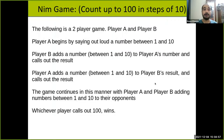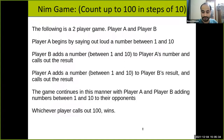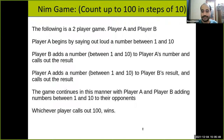Player A and player B play the game. Player A begins by saying out loud a number between 1 and 10. Player B then adds a number between 1 and 10 to player A's number. For example, if I start with number 5, and player B adds 6, player B will say 11. Then it's player A's turn again to add any number between 1 and 10 to 11.